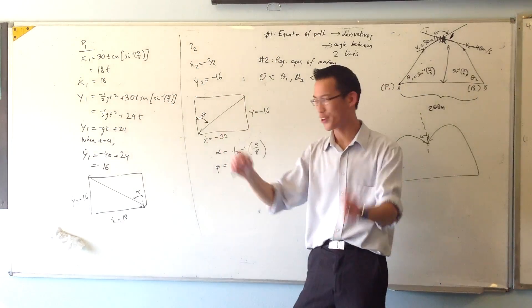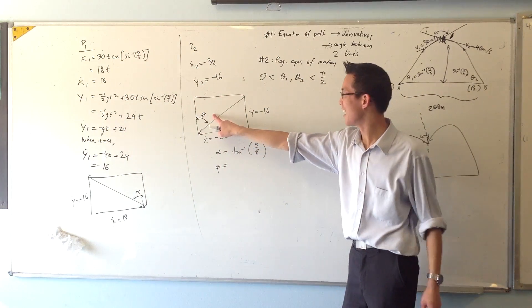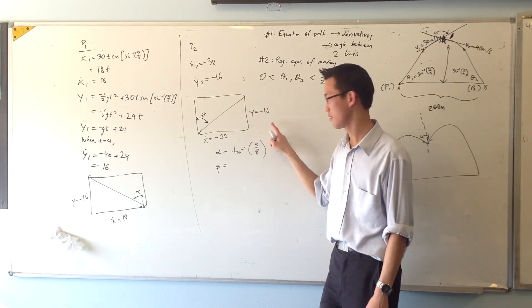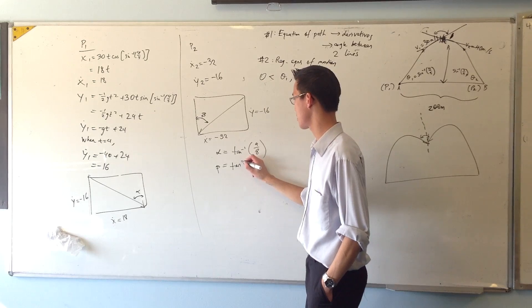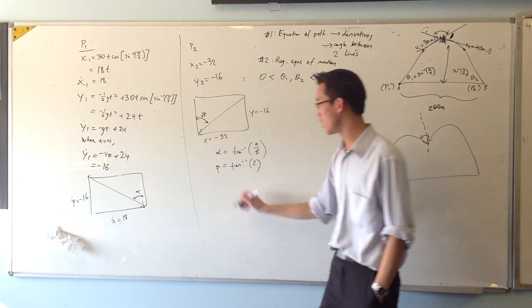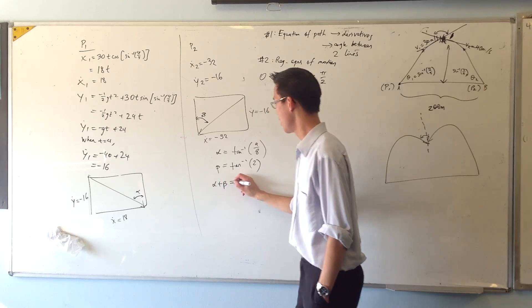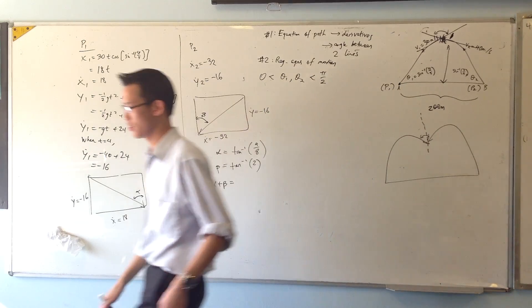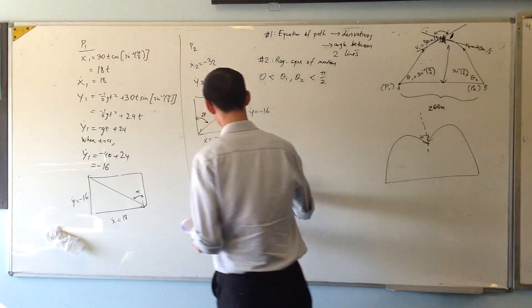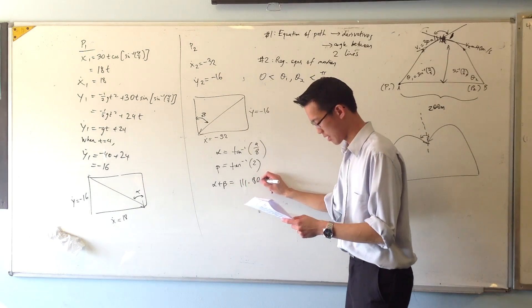One more time. Beta here. Opposite over adjacent. So it's going to be 32 over 16. That's 2. So the actual angle I want is alpha plus beta, which is those two, which I think your calculator wants to tell you is 107.8 degrees.